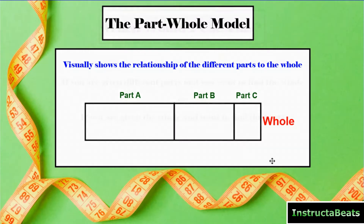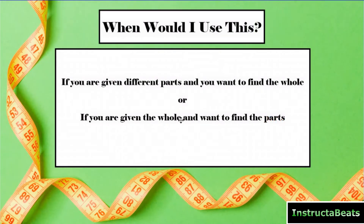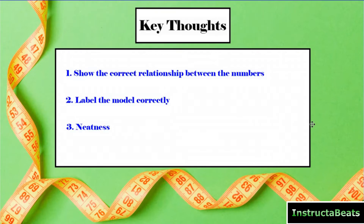We want to make sure we label it. When would you use this? If you're given different parts and you want to find the whole, that's what we're going to be focusing on today. Next lesson we'll be talking about if you're given the whole and want to find the parts or the groups. Our three key thoughts are the same as for the first two lessons: show the correct relationship between the numbers, label the model correctly, and be neat. If you slow down and take your time, you can make it neat enough to show conceptually what is happening.